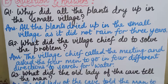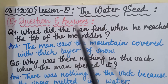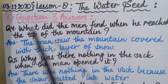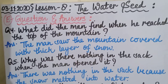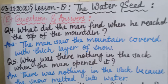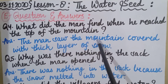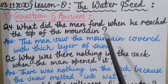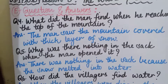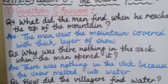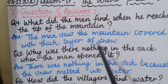Now, coming to the fourth question: What did the man find when he reached the top of the mountain? The answer is: the man saw the mountain covered with a thick layer of snow.